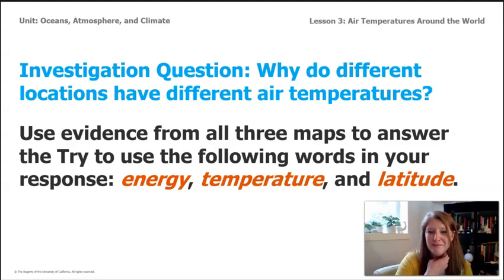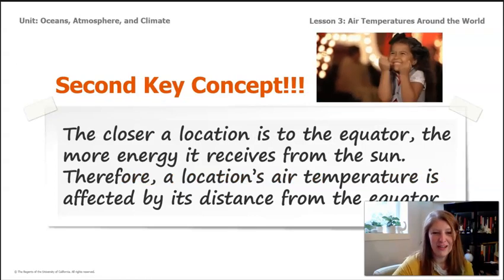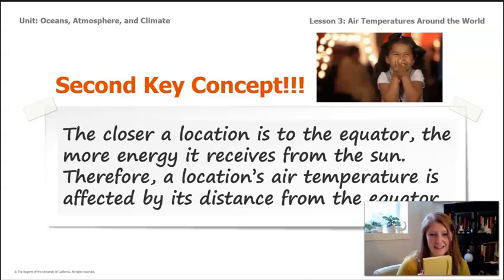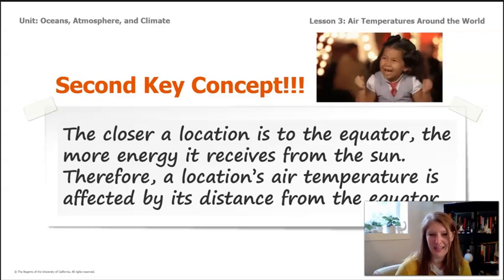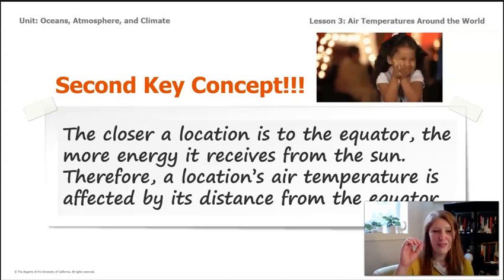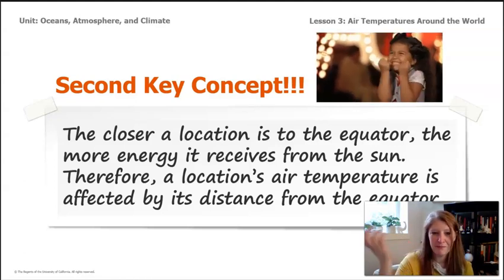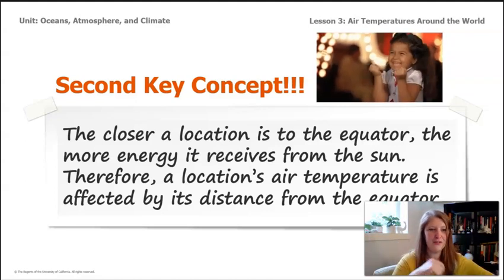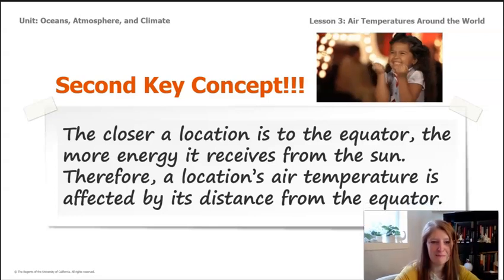I'm about to show you our second key concept for this unit, and we are so excited about this. So our second key concept, which you should definitely write down, find where you wrote down the first key concept and write it there with it so that we can have a collection of key concepts. The closer a location is to the equator, the more energy it receives from the sun. We discovered that together. Therefore, a location's air temperature is affected by its distance from the equator. So this is really important. This helps us understand that when we're thinking about how El Nino is affecting Christchurch, the thing we need to remember is that the distance that Christchurch is from the equator affects how much energy it's getting from the sun.